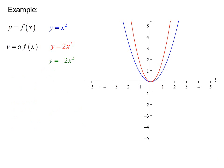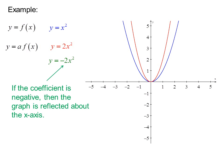If the coefficient is negative, then the graph is reflected about the X-axis. So in this case, we go over 1 and down 2, and we can sketch in our parabola.